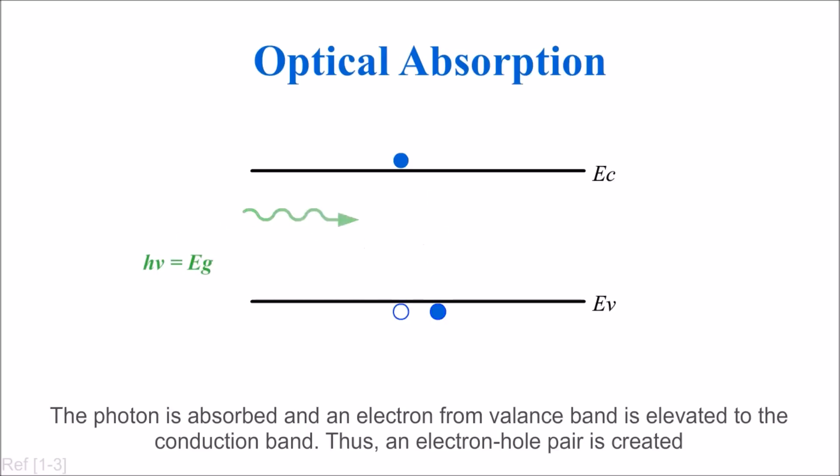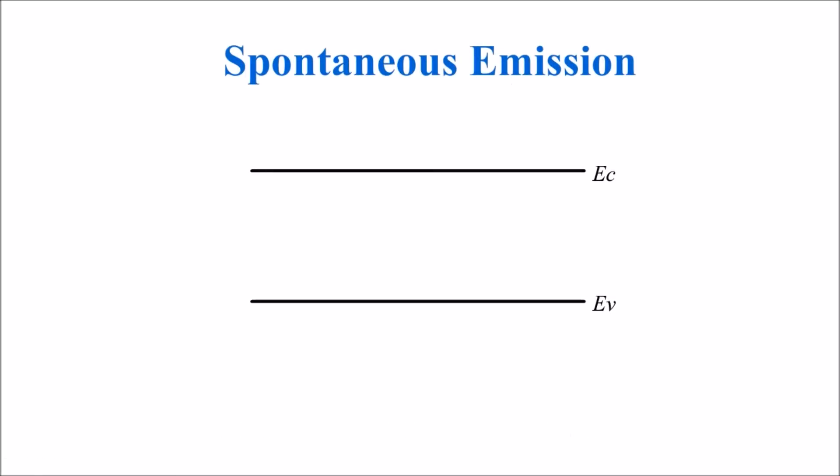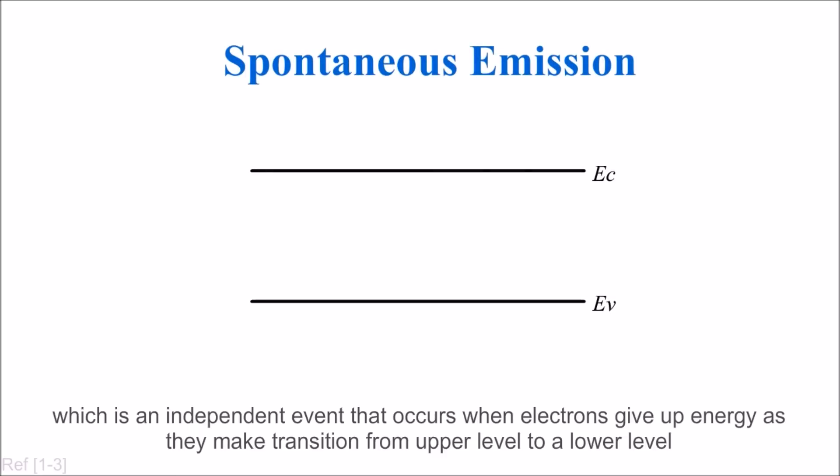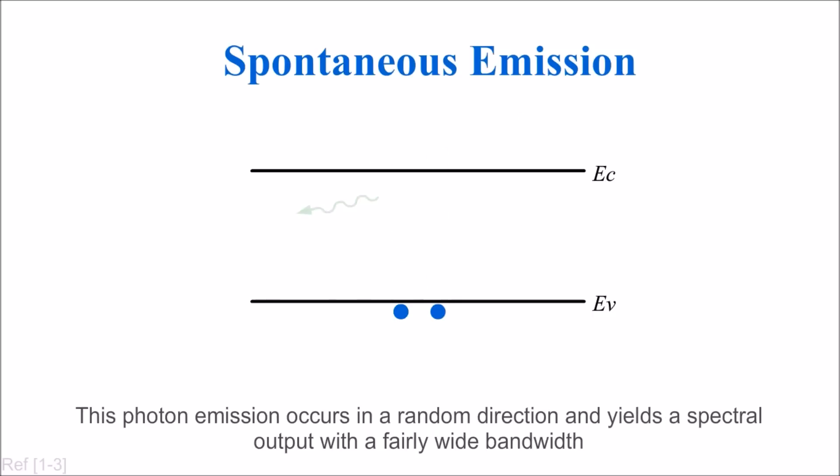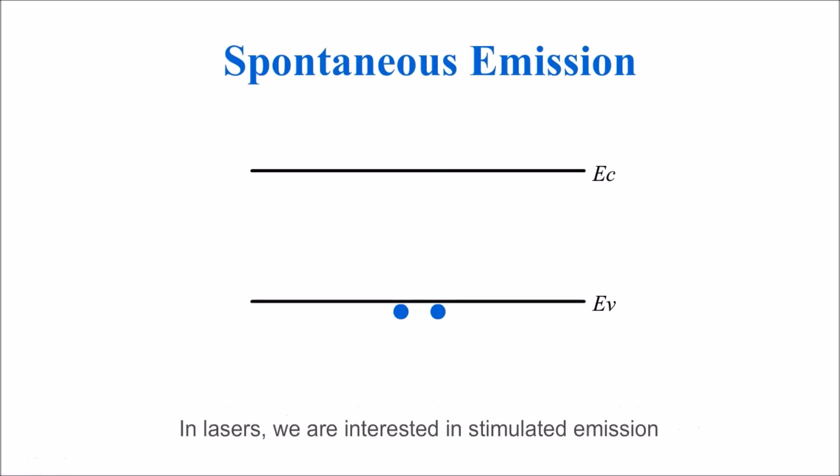Moving on to spontaneous emission, which is an independent event that occurs when electrons give up energy as they make transitions from upper level to a lower level. This photon emission occurs in a random direction and yields a spectral output with a fairly wide bandwidth. In lasers, we are interested in stimulated emission.